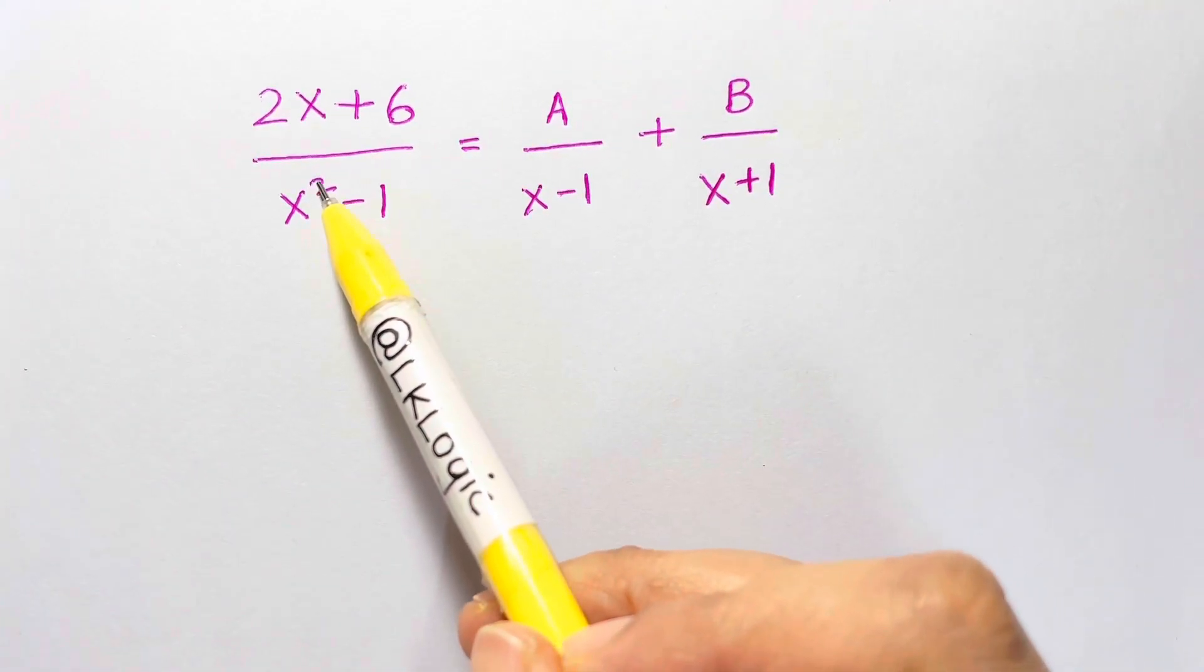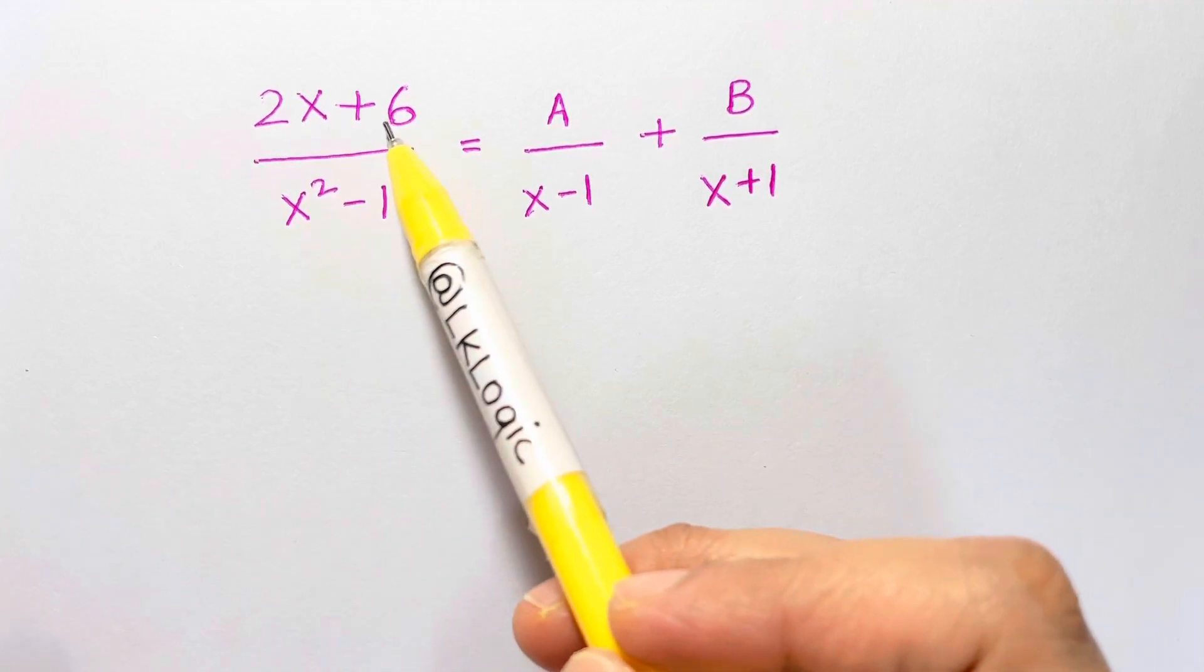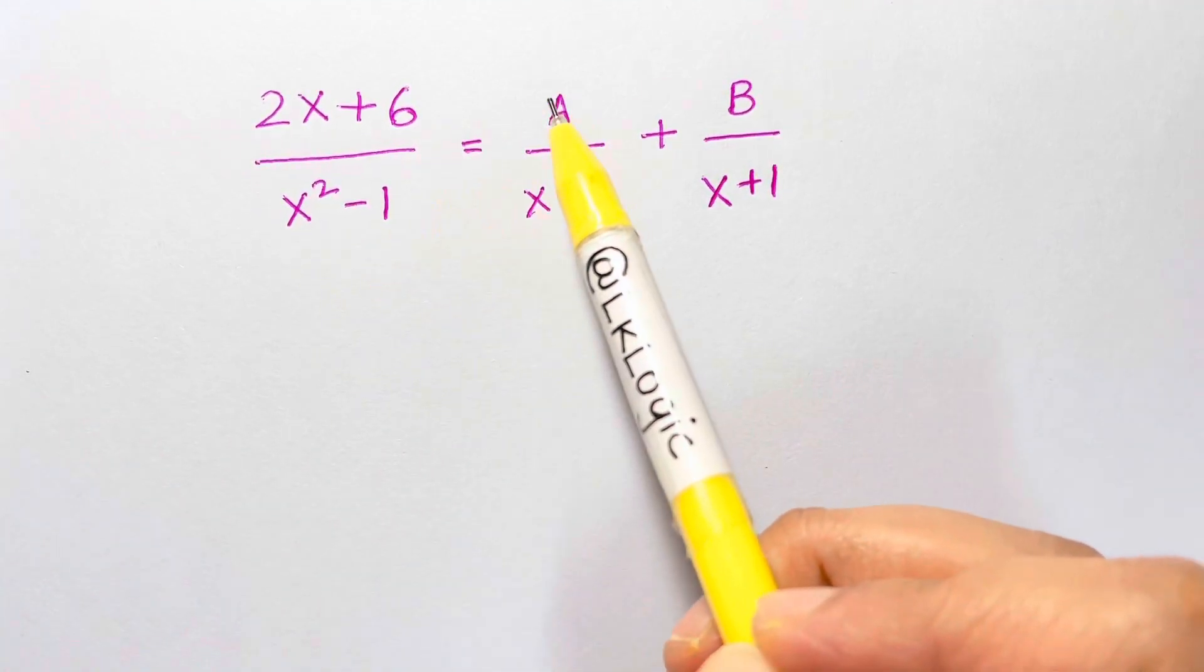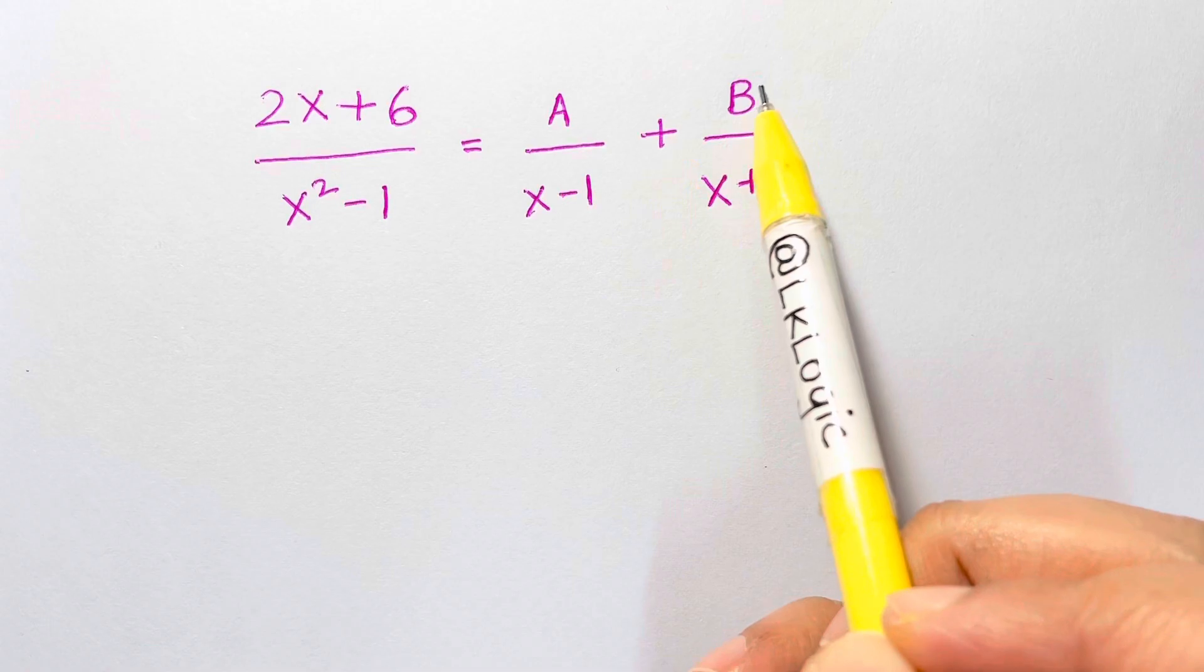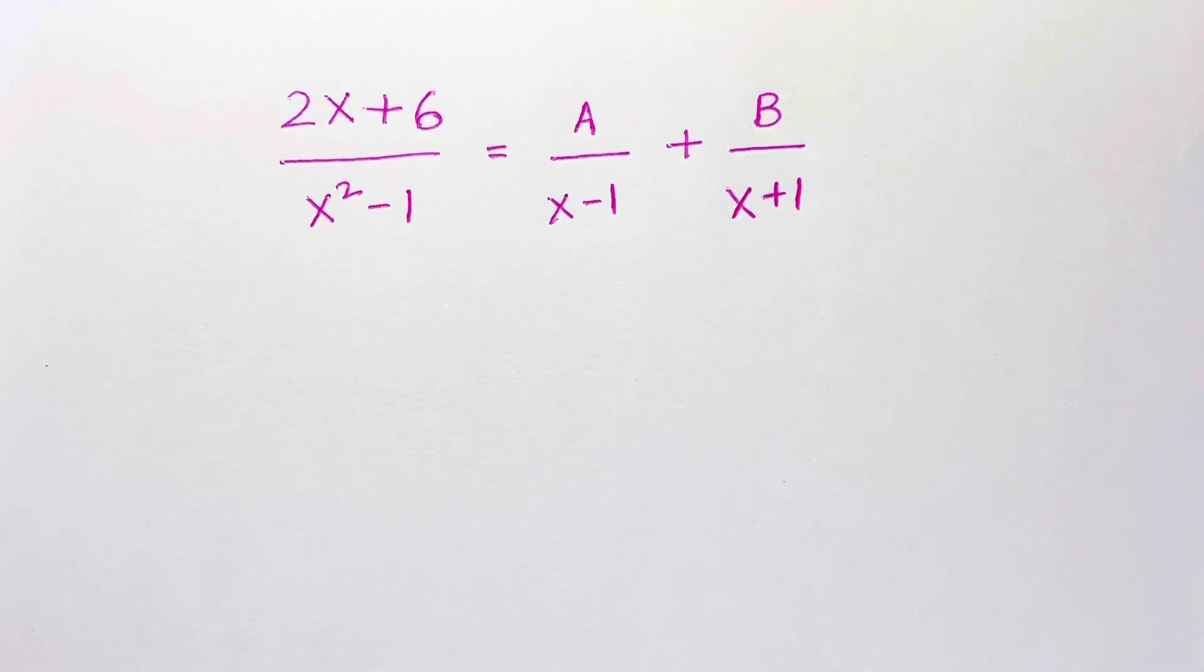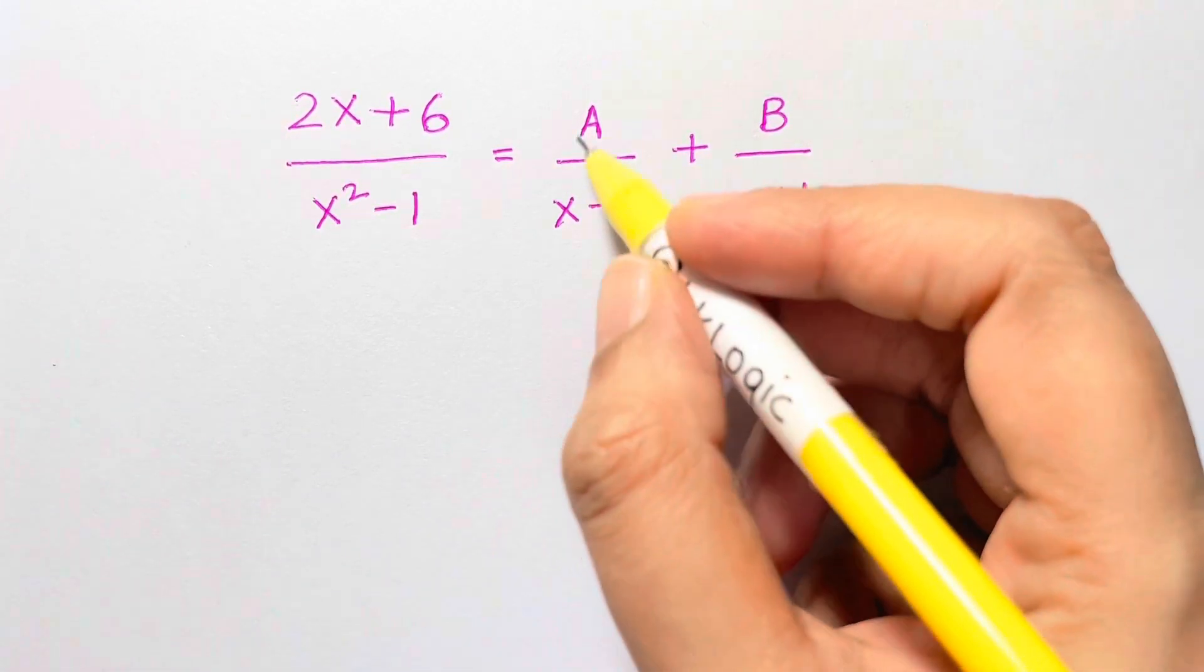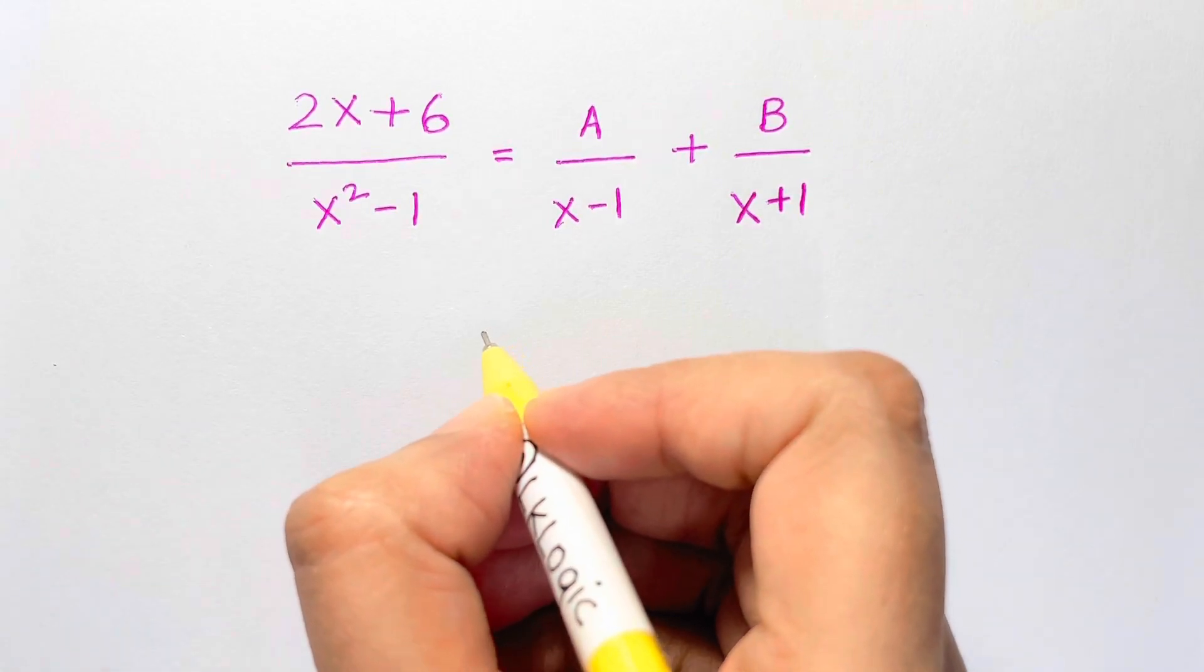Hi guys, there's a lovely Math Olympiad problem here which is 2x plus 6 over x squared minus 1 equals A over x minus 1 plus B over x plus 1, and we have to find the values of A and B. So what do we do when we have something like this? First of all, let's solve for the right hand side.